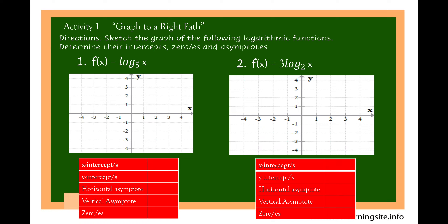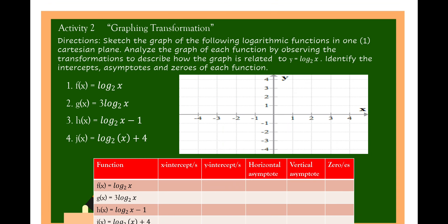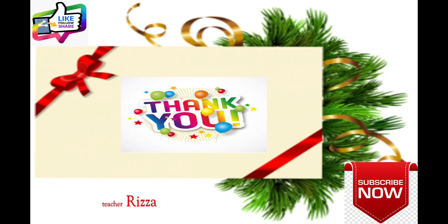For your activity — graphing a right path direction — sketch the graph of the following logarithmic functions. Determine the intercepts, zeros, and asymptotes. Number 1: f(x) is equal to log of x to the base of 5. Number 2: f(x) is equal to 3 log of x to the base of 2. Write the x-intercept, y-intercept, horizontal asymptote, vertical asymptote, and zeros. For Activity 2 — graphing transformation — sketch the graph of the following logarithmic functions in one Cartesian plane. Analyze by observing transformations and describe how each graph is related to y is equal to log of x to the base of 2. Identify intercepts, asymptotes, and zeros for functions 1 through 4.